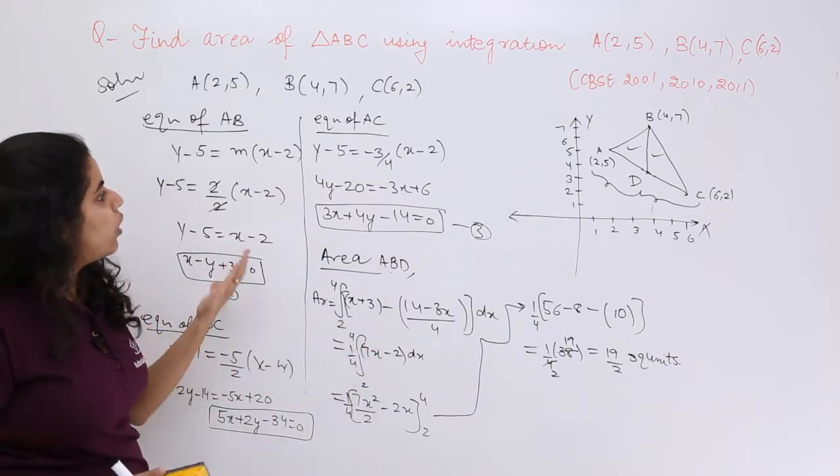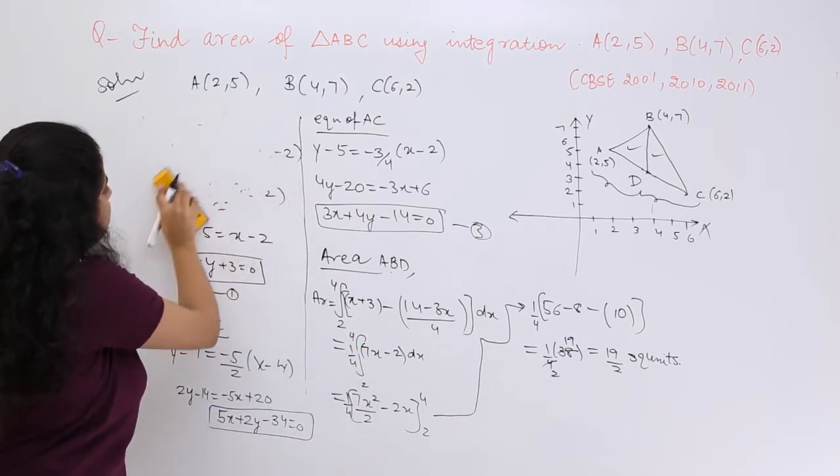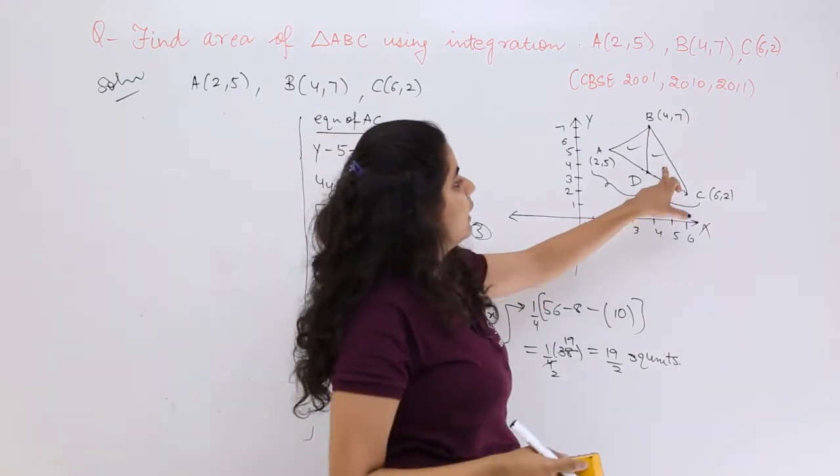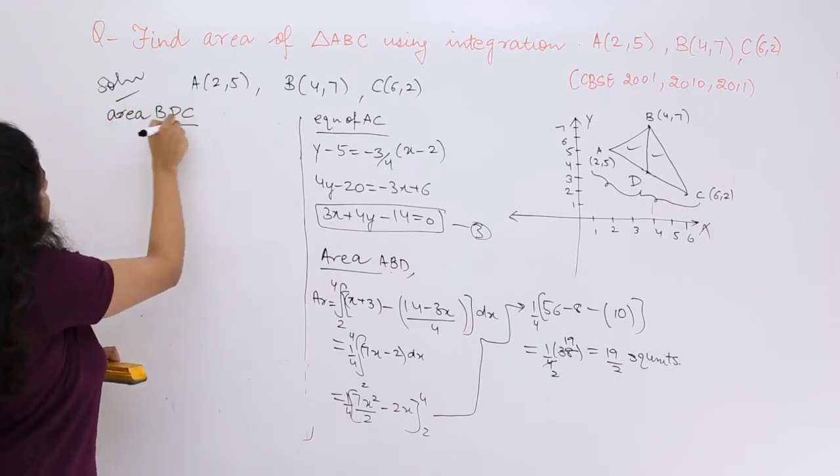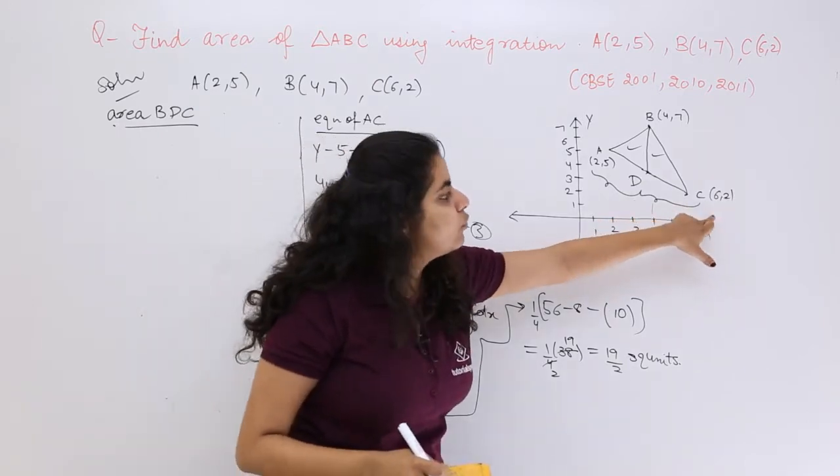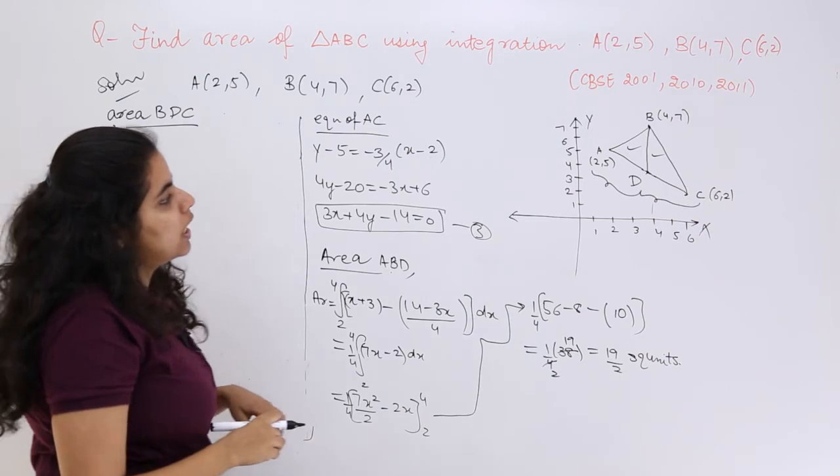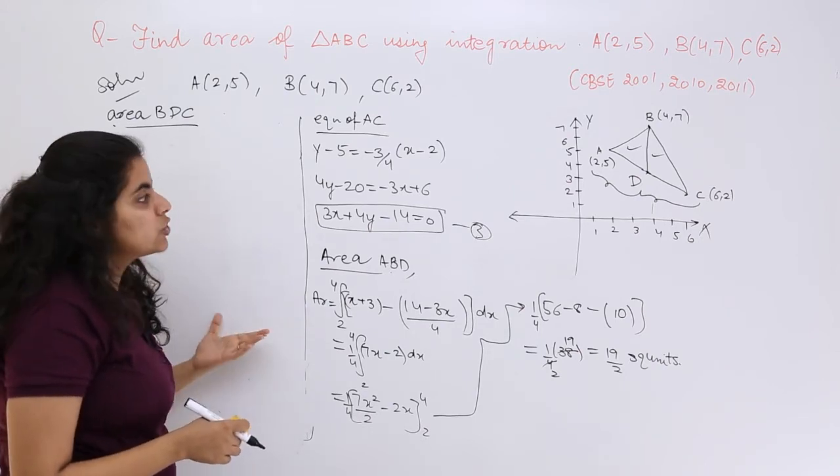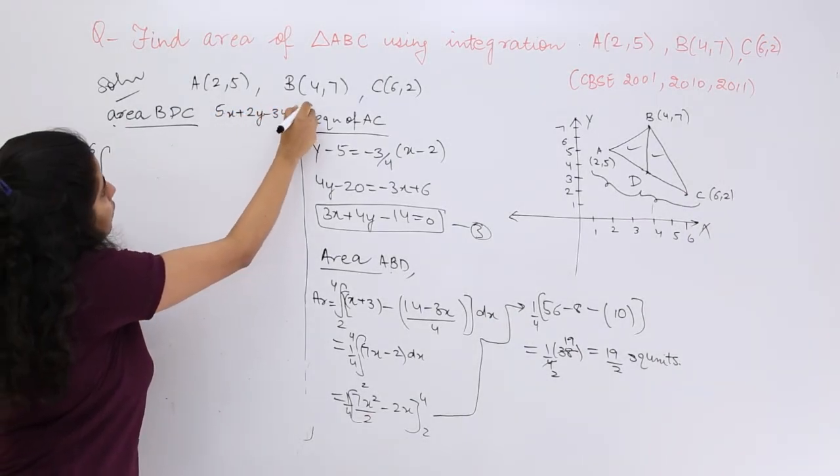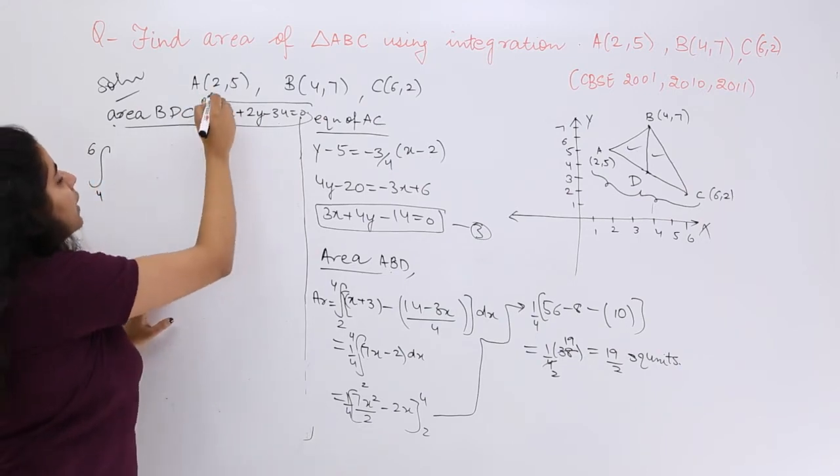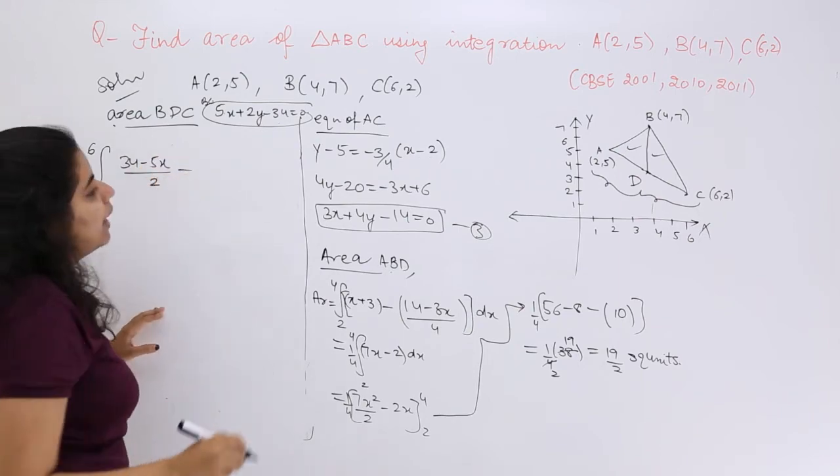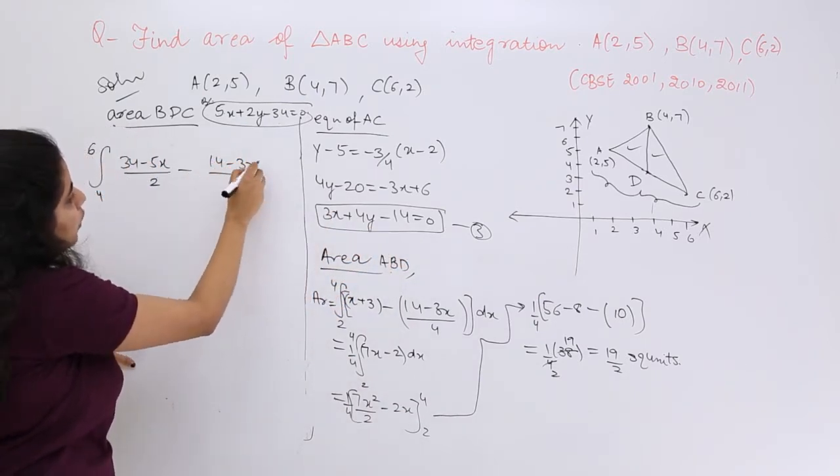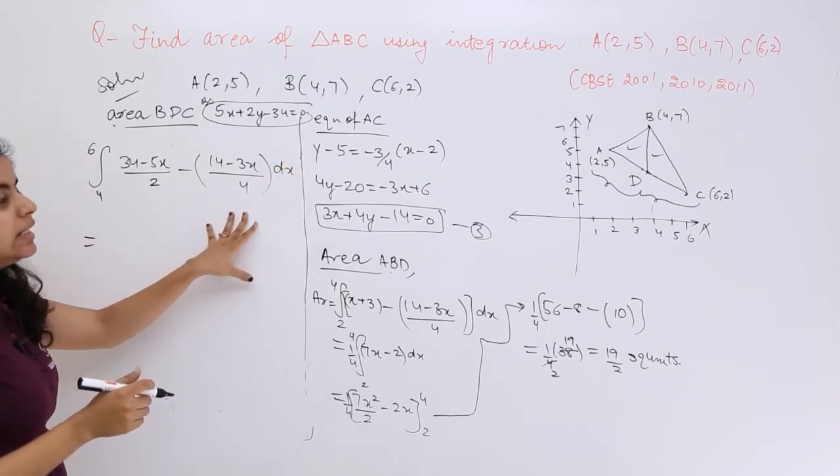Now once you have computed this, let me move for this other part of the solution to this side of the board. I have to create space for the further part of the solution. And what is the further part? Nothing but knowing this part's area, that is BDC. So what is area BDC? Again y₂ - y₁, this time we are not going from 2 to 4 but 4 to 6. So it should be from 4 to 6, again y₂ - y₁, upper minus lower, BC. BC, what was the equation? BC was 5x + 2y - 34 = 0. So y₂ - y₁ means upper minus lower. So it should be (34 - 5x)/2 minus the lower. Lower is AC. What should be y from here? (14 - 3x)/4 and dx.